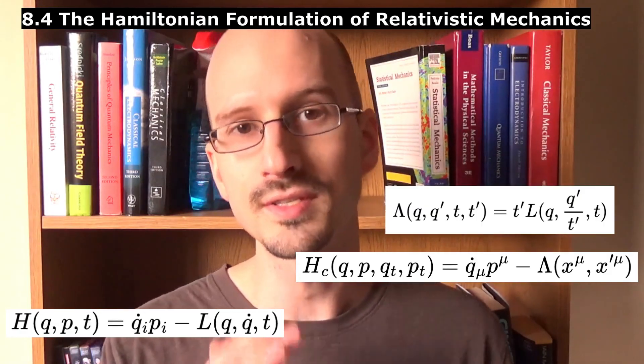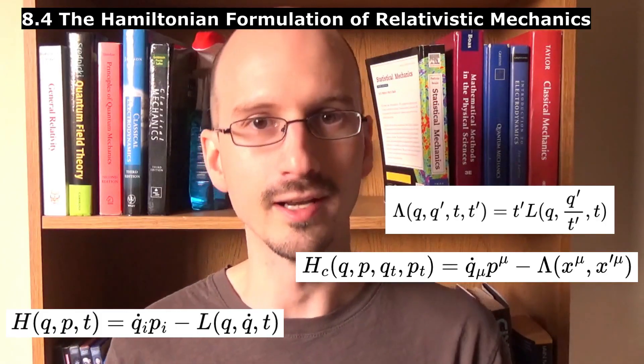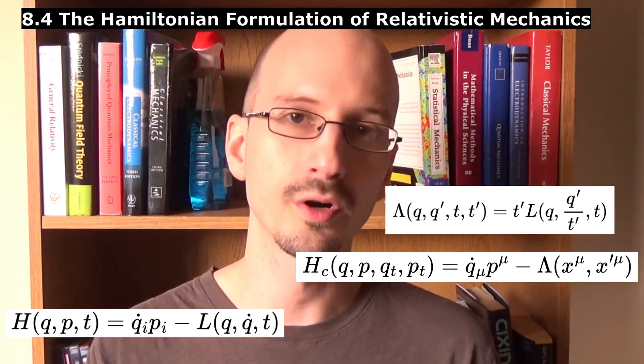The second method is to use the same conversion equation, but with a covariant Lagrangian to find a covariant Hamiltonian.